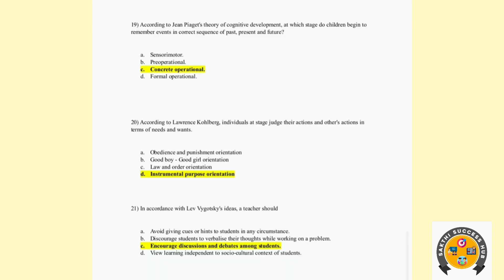Nineteenth question: According to Jean Piaget's cognitive development theory, at which stage do children begin to remember events in the correct sequence of present, past, and future? Clear understanding is in the formal operation stage. Twentieth question: According to Lawrence Kohlberg, individuals at stage 2 judge their actions and others' actions in terms of needs and wants — this is the instrumental purpose orientation.